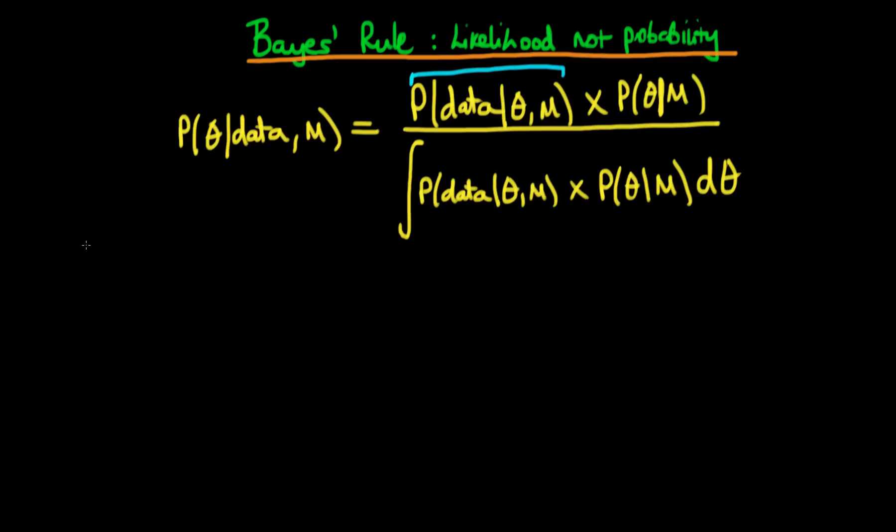So let's focus on this particular part of Bayes' rule. Let's imagine that we're assuming theta is fixed and our choice of model M, and we're integrating this probability density over all potential values of the data, which I've called x here.